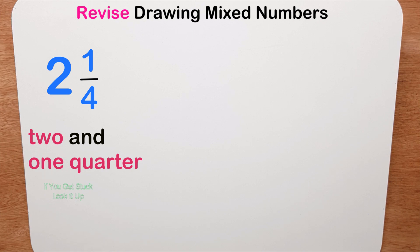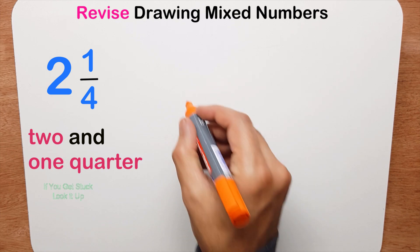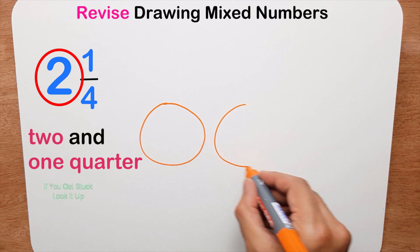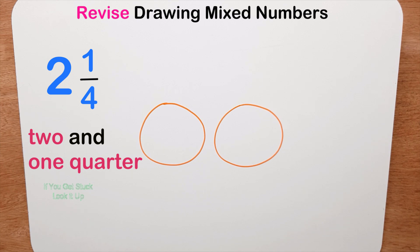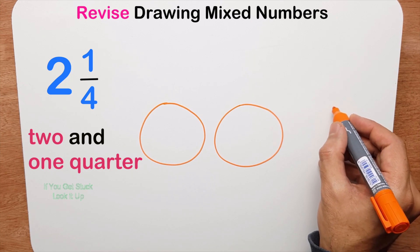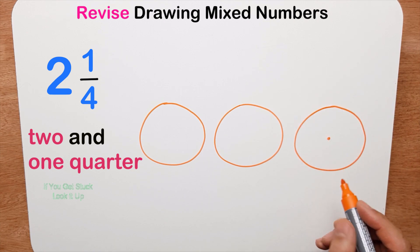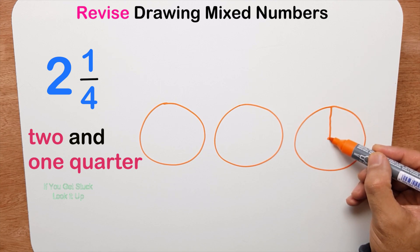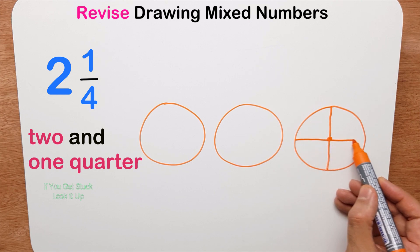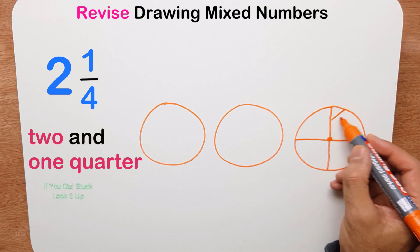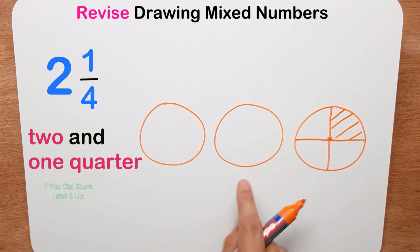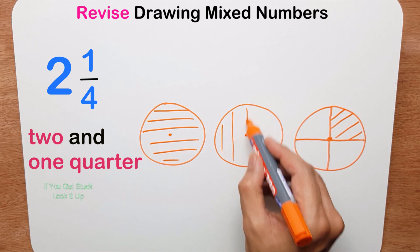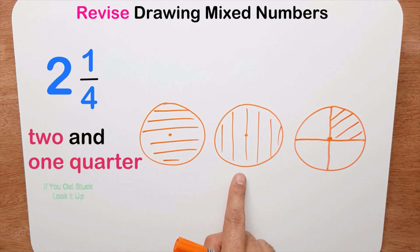The second mixed number is two and one quarter, or two and a quarter. So let me draw two pizzas first — one and two — that's the two whole pizzas. Now I need to draw one quarter, so let me draw another pizza. There's the center and I want to cut this into four equal pieces, and I just want one piece shading.